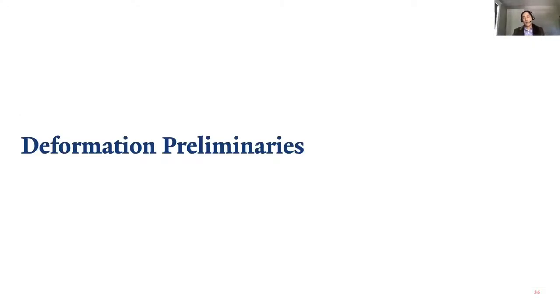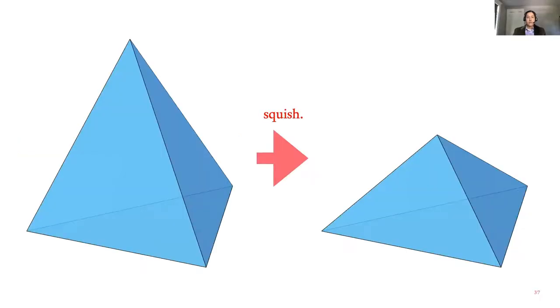We're going to begin with a brief refresher on deformation mechanics, just so we're on the same page with the style of analysis we'll be using. We want to detect when an object has been deformed — squashed or stretched — and based on how much it is squashed or stretched, we can compute how much force the tet will resist with, how much it will try to go back to its original shape.